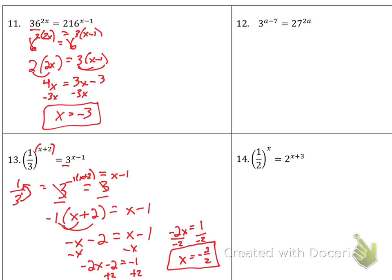So when you look at a fraction like in number 14, I see the base is 2. If I'm going to change a fraction like 1 over 2 into a whole number, that's just like saying 1 over 2 to the first power. I can change that by bringing this up and making it a negative exponent — so that's just like saying 2 to the negative 1. Then you would just set the exponents equal to each other and you'd be ready to go.